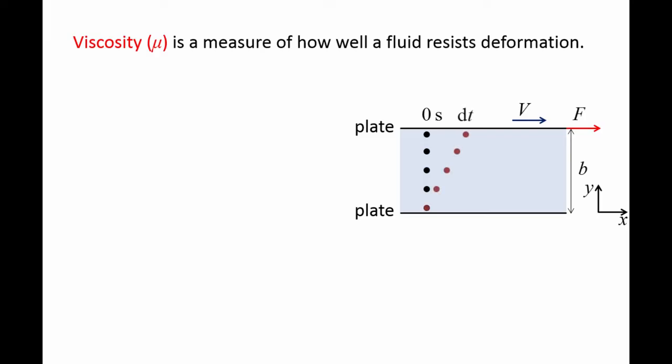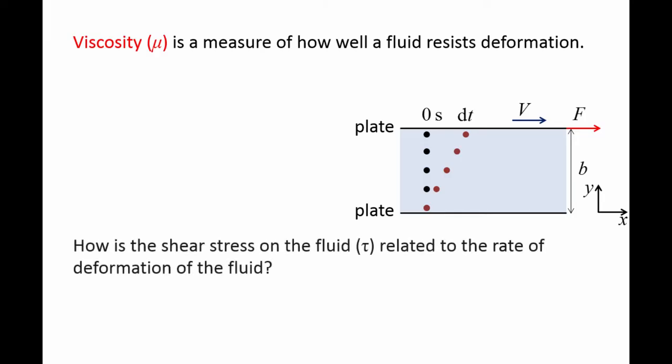After a small amount of time dt has passed, most of the fluid particles have moved toward the right, indicating that the fluid has deformed. We want to determine the relationship between the shear stress tau caused by the force F and the rate of deformation of the fluid.